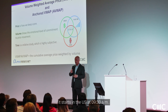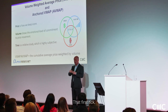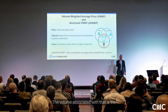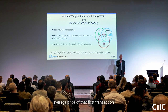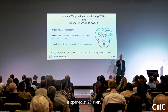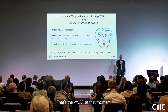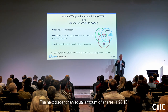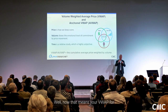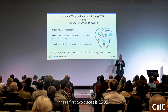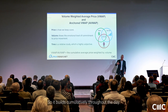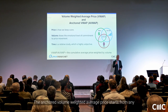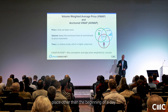It starts in the US at 9:30 AM. That first tick — that first trade of the day — the volume associated with it gives the average price of that first transaction. Say it opened at 25.00 even — that's the VWAP at that moment. The next trade for an equal number of shares is at 25.10, so your VWAP for those first two trades is 25.05. It builds cumulatively throughout the day. The anchored volume-weighted average price starts from any place other than the beginning of a day.